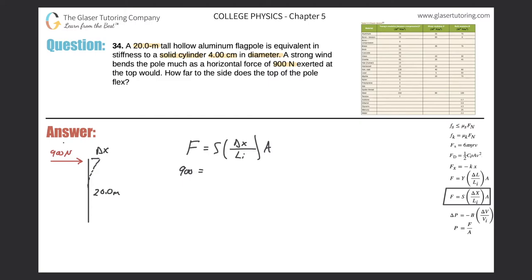The shear modulus here, they told us it's similar to a solid cylinder. I'm going to assume a solid cylinder of aluminum, that's here at the top and it has a value of 25 times 10 to the 9.